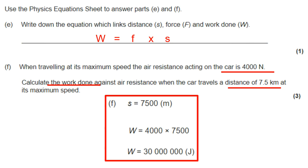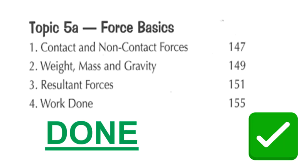A key exam trap: convert 7.5 kilometers to 7,500 meters before using the work done equation. That unit conversion is often worth an extra mark.